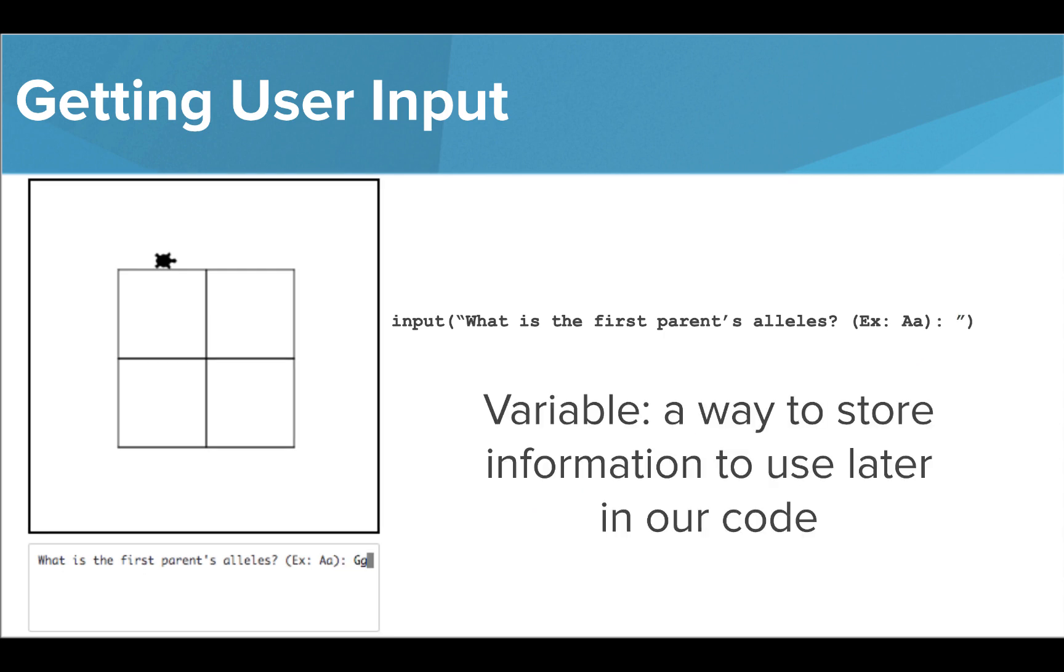Now we can see that the user has typed capital G, lowercase g. In order to use this information, we need to save it somewhere. We're going to use a variable in order to do this. A variable is just a way we can store information to use later in our code.